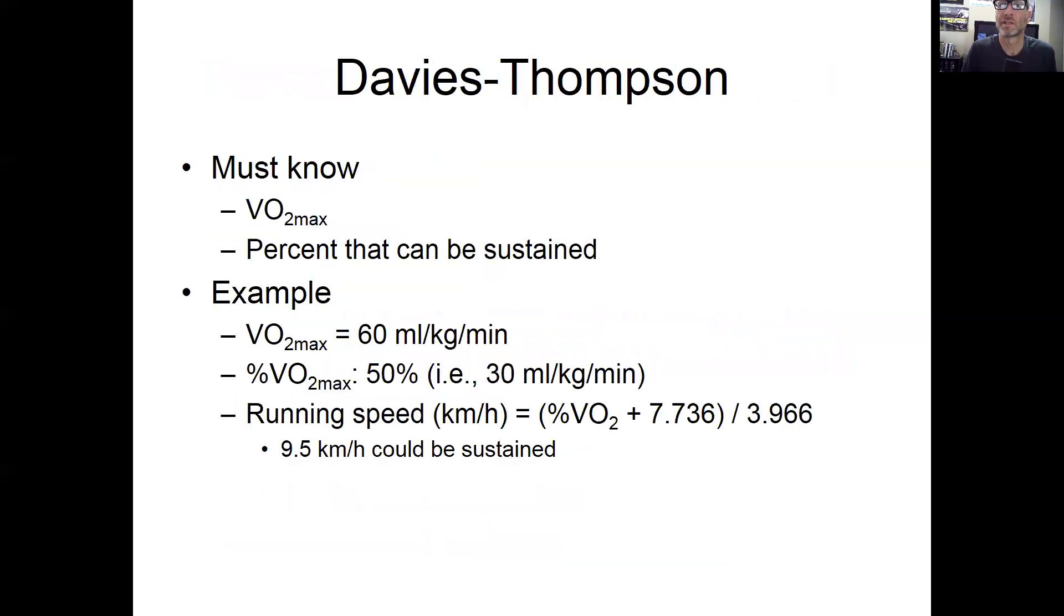So I'm going to go through these tables that I don't use - I'll use more the software that's out there - but the concepts are the same. With Davies Thompson, you need to know your VO2 max and the percent of VO2 max that can be sustained for a period of time. That's analogous to the functional threshold power that I mentioned - how long you can or what pace you can sustain for an hour, for example. Here's an example: VO2 max 60 mls per kg per minute. If you can sustain 50% of that, then you can calculate your running speed. In this example, you can sustain 9.5 kilometers per hour, and then you build your race pace around that.